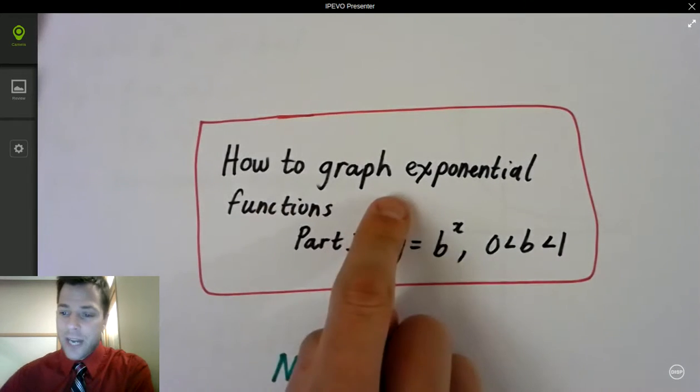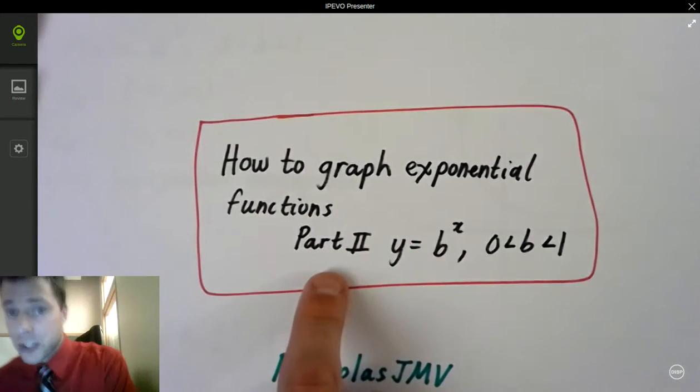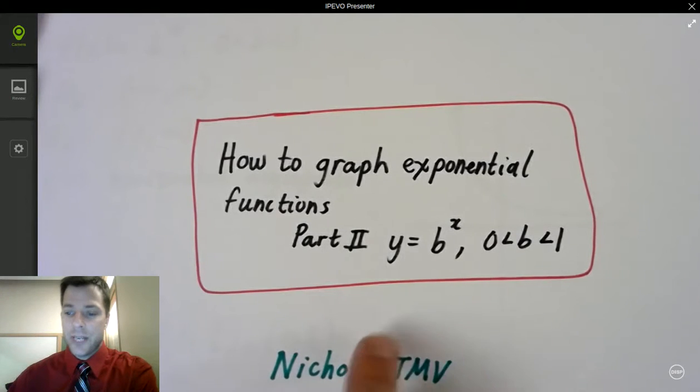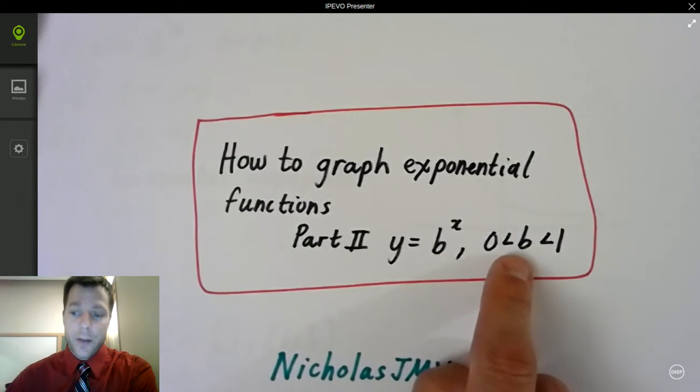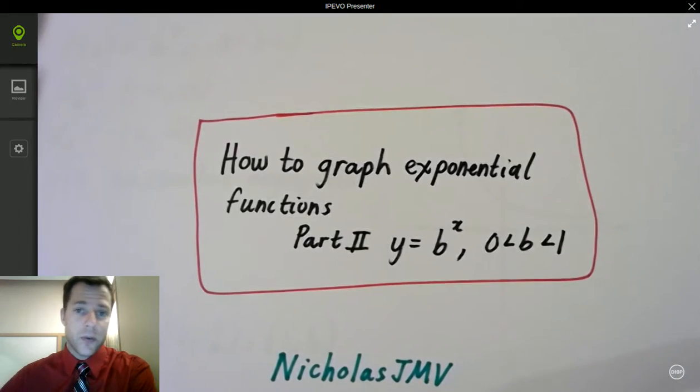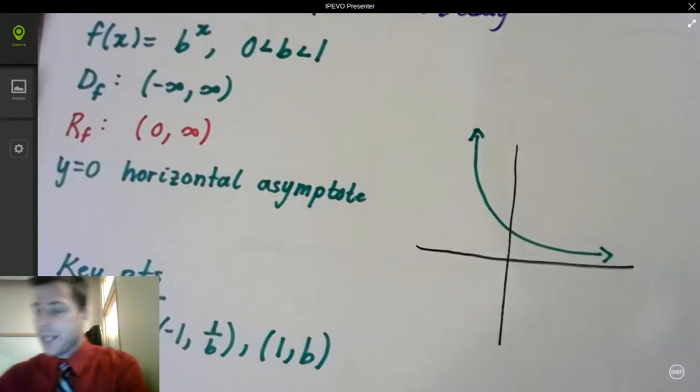Hey everybody, welcome to How to Graph Exponential Functions Part 2. This is Nicholas J.M.V. and today we're going to talk about y equals b to the x but our b value is going to be between 0 and 1. This is what we call exponential decay.